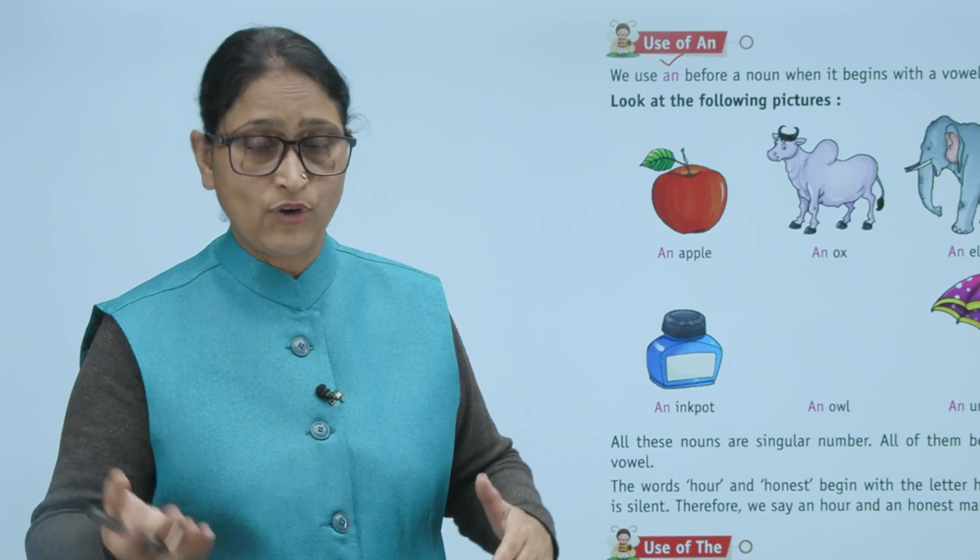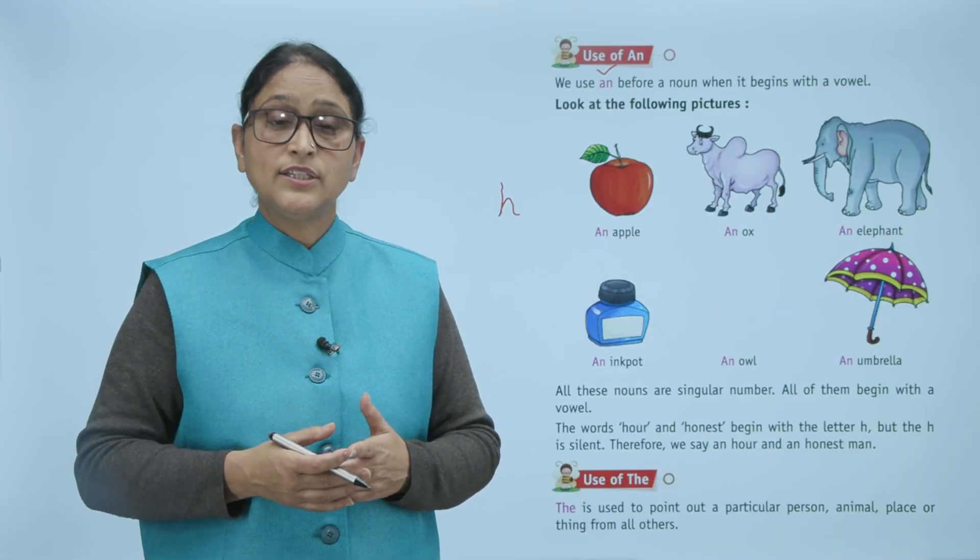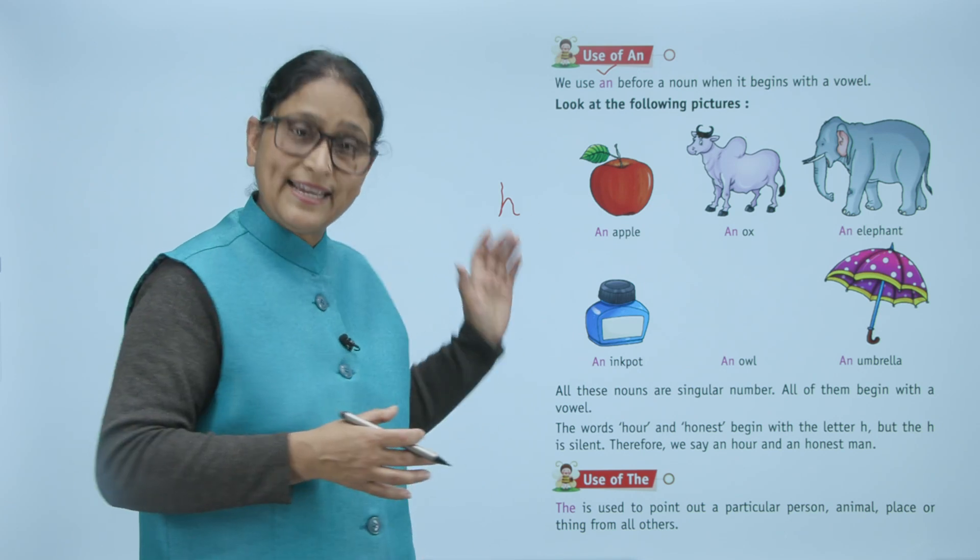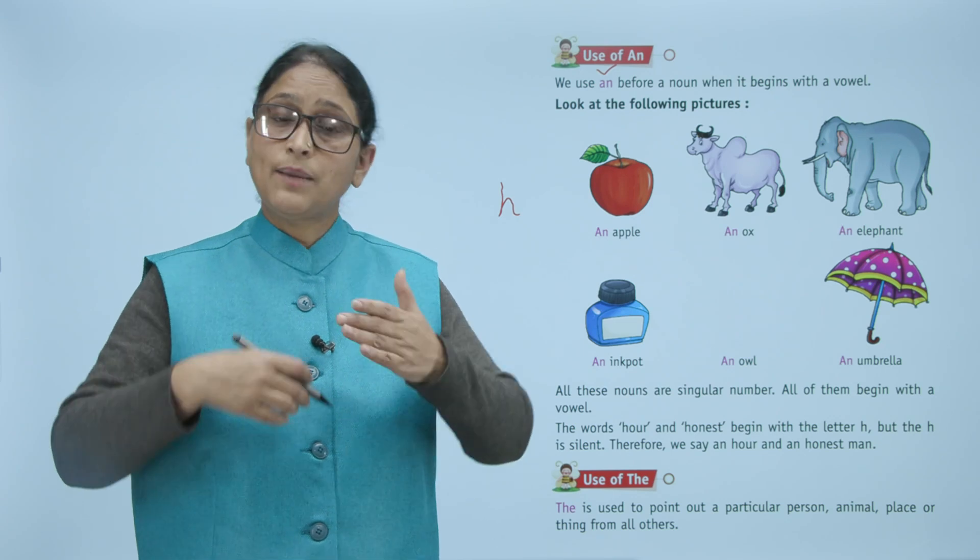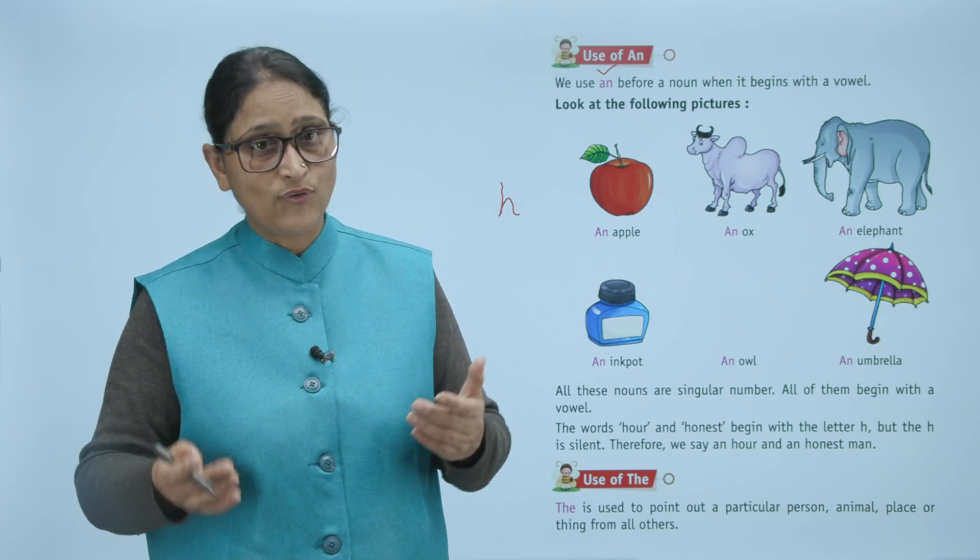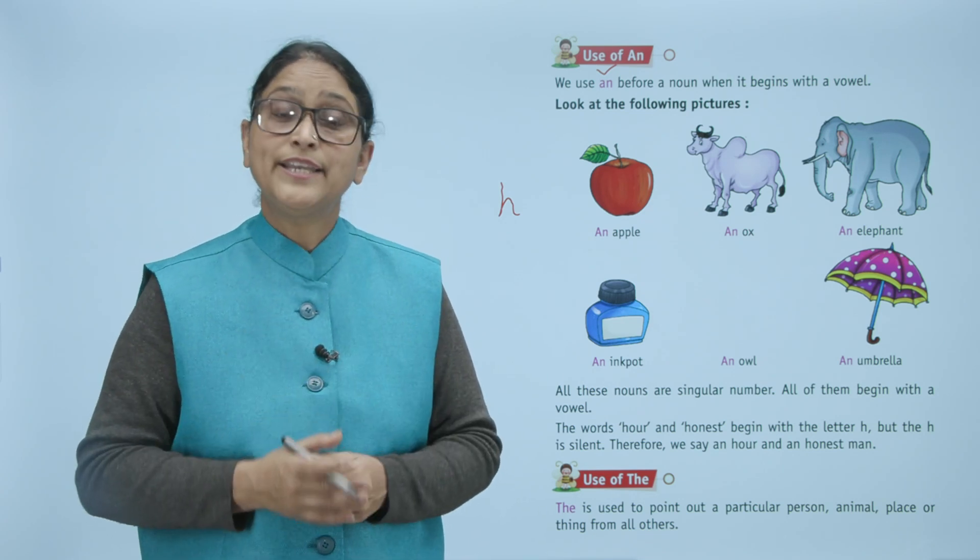The words 'hour' and 'honest' dono kis se shuru hote hain? H se. Aur H silent hota hai. Aur humein jo ye sound deta hai, kis cheez ka deta hai? Vowel ka. To hum is se pehle kis ka use karte hain? 'An' ka.